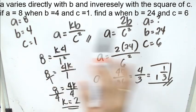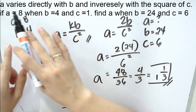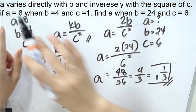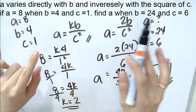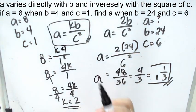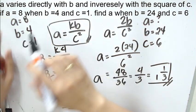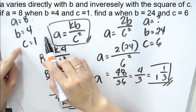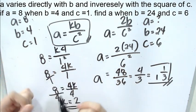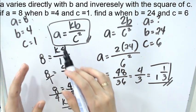Again, whenever we encounter such statement or such situation, we first read the first statement and make it into formula. A varies directly with b and inversely with the square of c. This is the first step. We write it as it is. Next, we solve for the value of k based on the next statement. If a is 8, b is 4, and c is 1, we evaluate. When we say evaluate, we are just going to substitute the value of the letters into the given variable. And then we solve for the value of k.